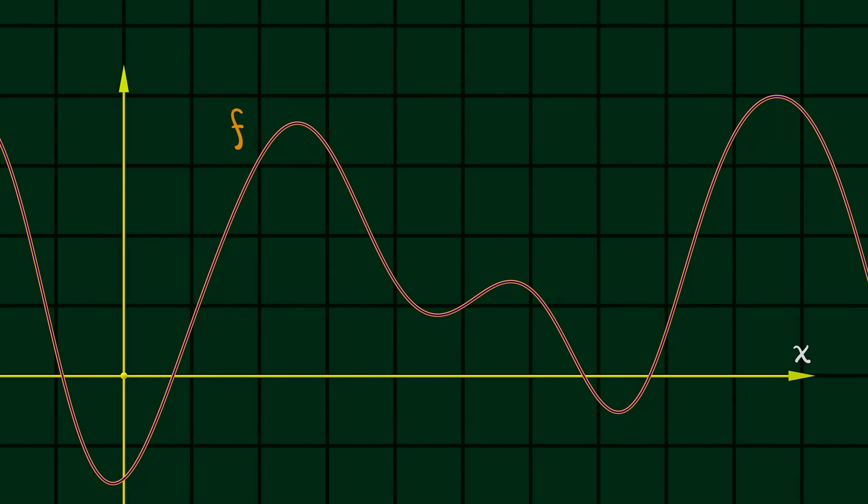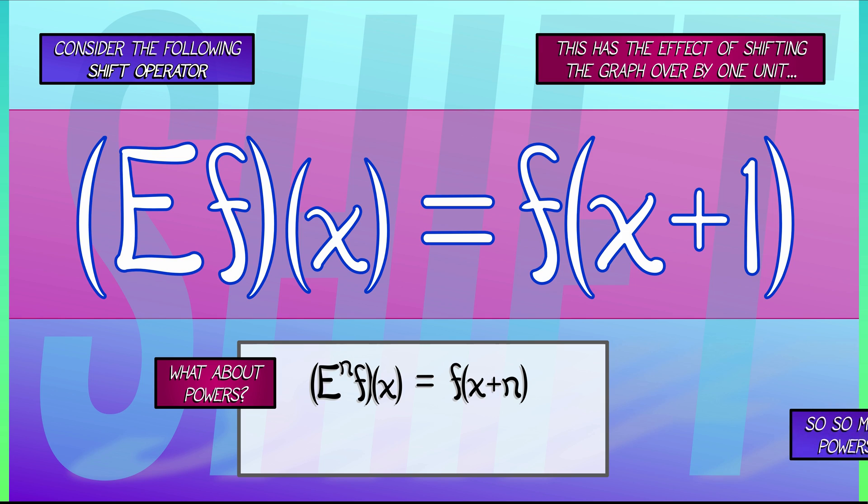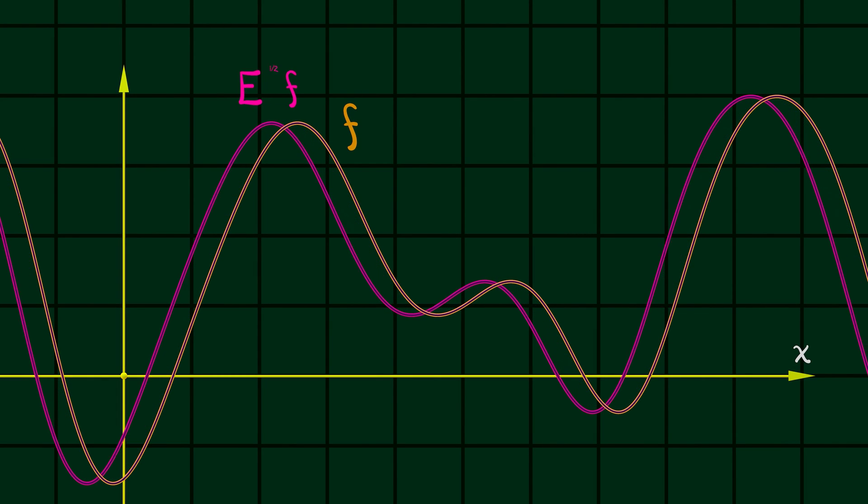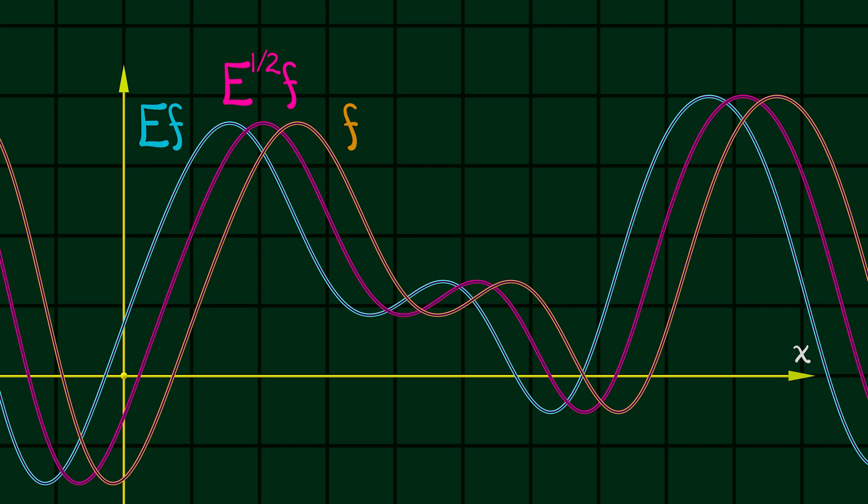And this works for negative n as well as positive n. So in a sense, the inverse of the shift operator moves over by one in the other direction. And there's no reason why we have to stop with integer powers of this operator. What is the square root of the shift operator? Well, that's E to the one half, and that is shifting over by one half. If you do it twice, you get E.